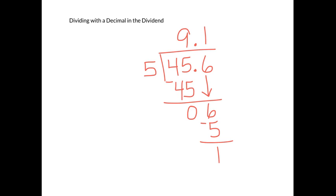So we need to continue dividing. To continue, we're going to put a zero in the dividend. We're after the decimal point so adding that zero is not going to change the value of our dividend.